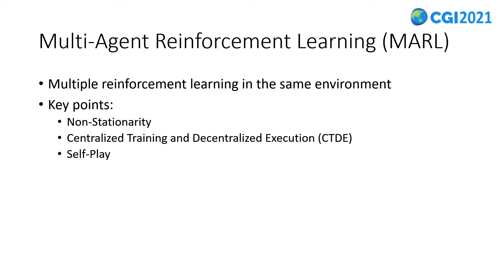Self-play is a method frequently used in multi-agent competition environments, where an agent learns by competing with itself. The idea behind this is that the agent will learn better if it competes with an opponent with a similar skill level. I'll introduce some interesting applications based on self-play later.